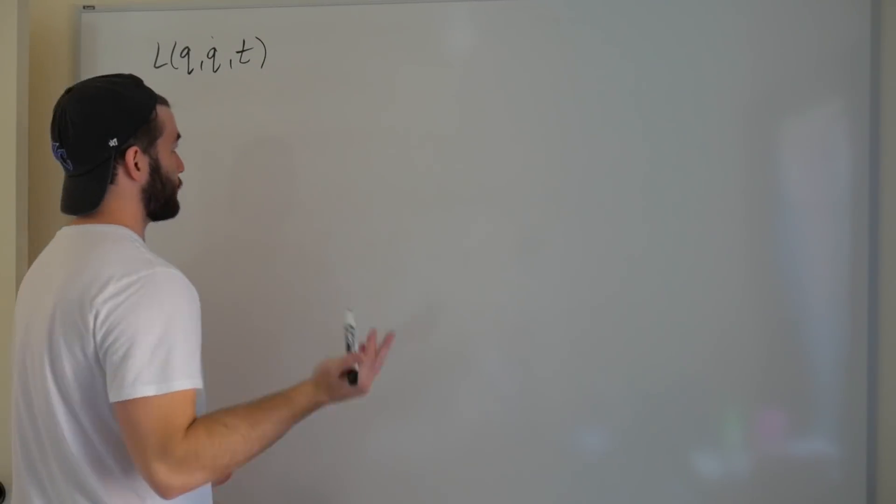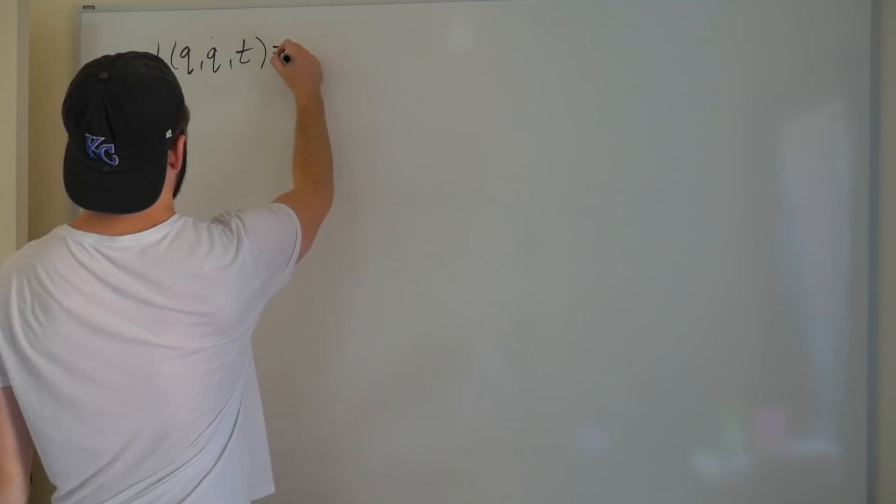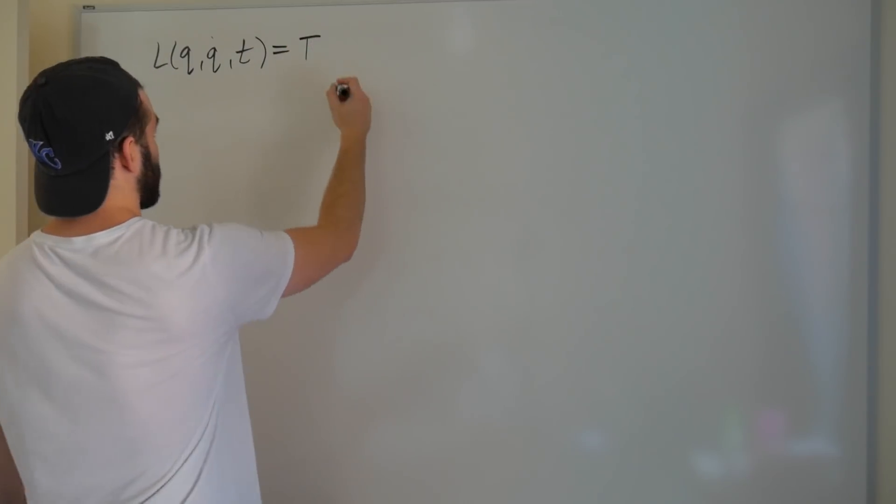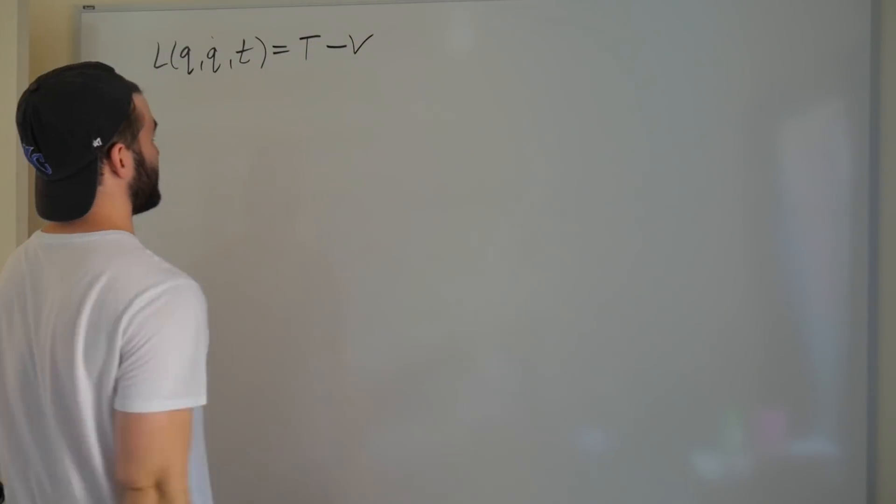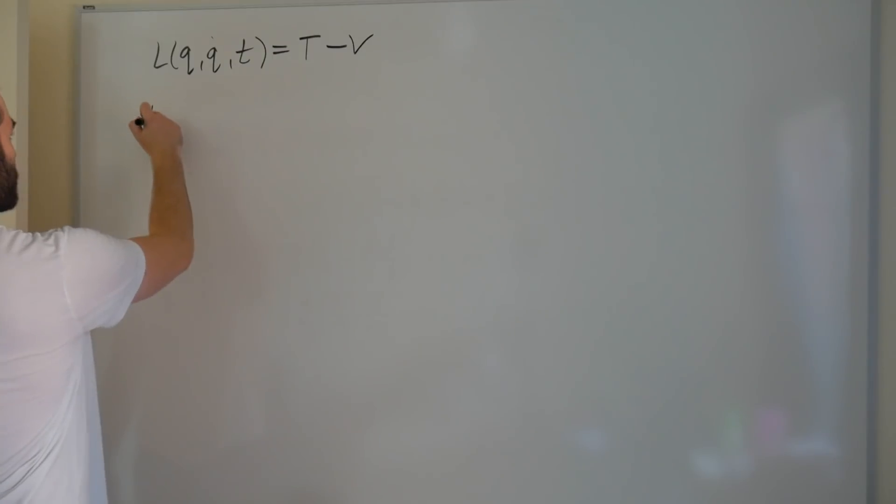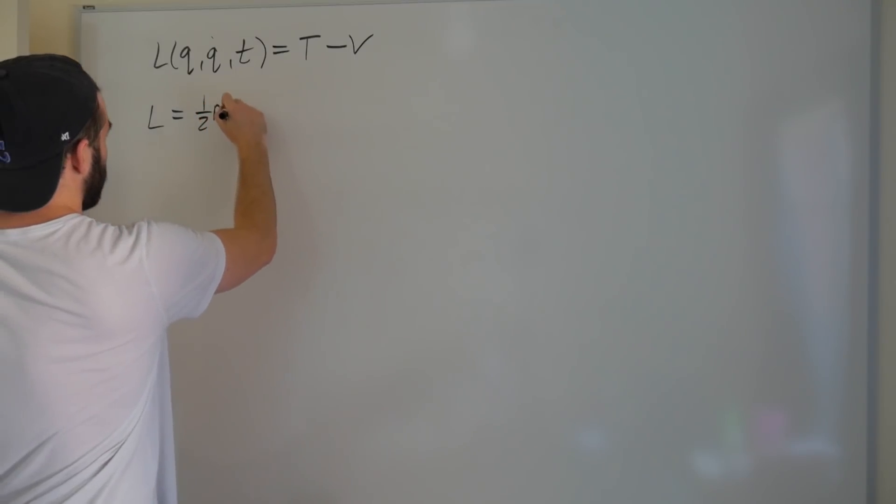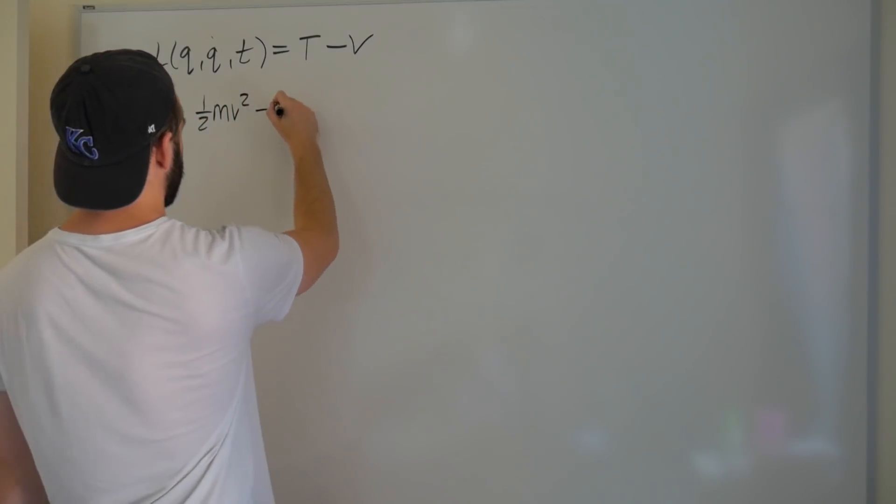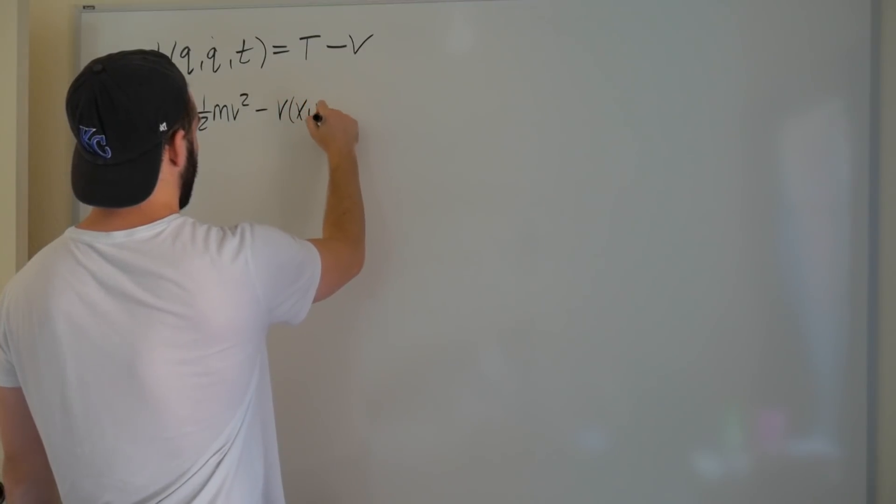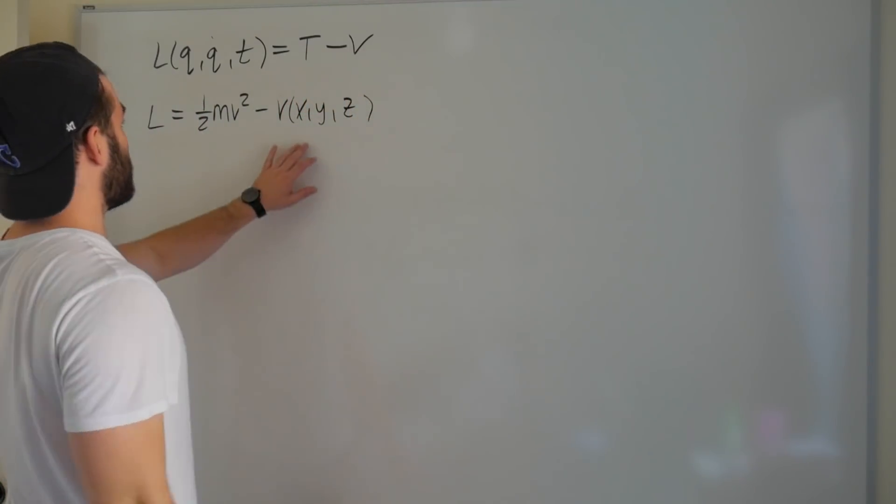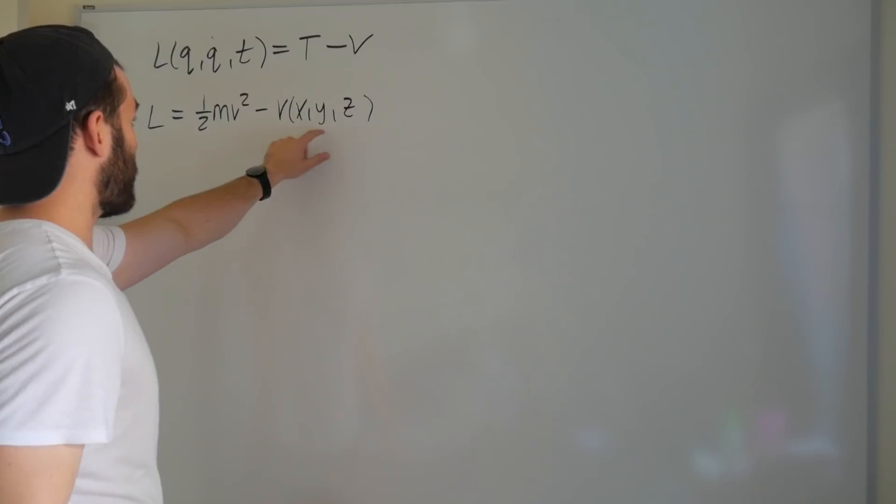Let's assume we're dealing with a conservative force, which means that our Lagrangian is nice and can be written in terms of the difference between some kinetic and some potential energy. We're also going to assume that the Lagrangian's kinetic energy can be written of the form one-half mv squared. And we'll keep the potential just a function of x, y, and z, which means that we're choosing our generalized coordinates to be x, y, and z.